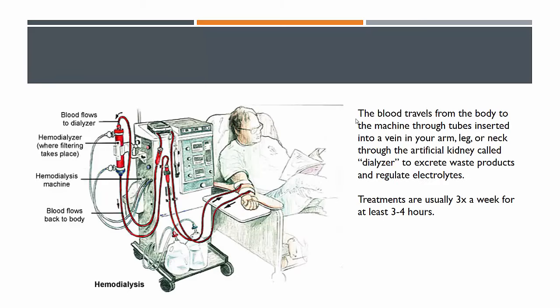Hemodialysis is generally done at a renal unit. You go there about three times a week, sit in a chair, and it takes about three or four hours. The setup has tubes coming from your vein going to a hemodialysis machine. There are two main parts: the hemodialysis machine itself and the dialyzer, which is the filtering aspect of the apparatus.